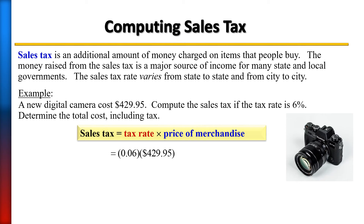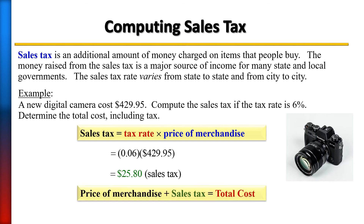For an item costing $429.95, you should have gotten $25.80 as the sales tax. Now add the camera price plus the sales tax. The total amount you wind up paying for the camera is $455.75.